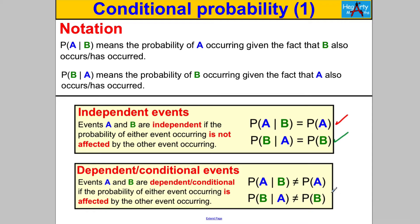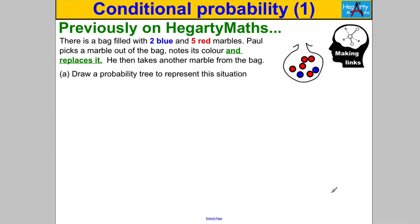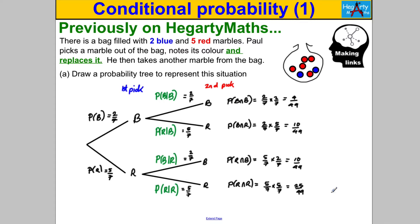Let's revisit a question we've previously done to illustrate independence versus dependence clearly. Hopefully you drew the probability tree. The key idea here was that Paul replaced the marble after the first pick, meaning the second pick was independent of the first. If he took a blue on the first pick, the probability was two sevenths. The probability he takes another blue given he got a blue on the first pick is still two sevenths, because he put that marble back. Similarly, the probability of red was five sevenths throughout the whole diagram.